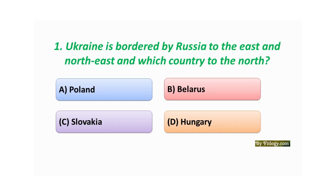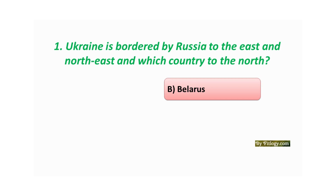Question number one: Ukraine is bordered by Russia to the east and northeast, and which country to the north? Option A: Poland. Option B: Belarus. Option C: Slovakia. Option D: Hungary. The correct answer is Option B: Belarus.